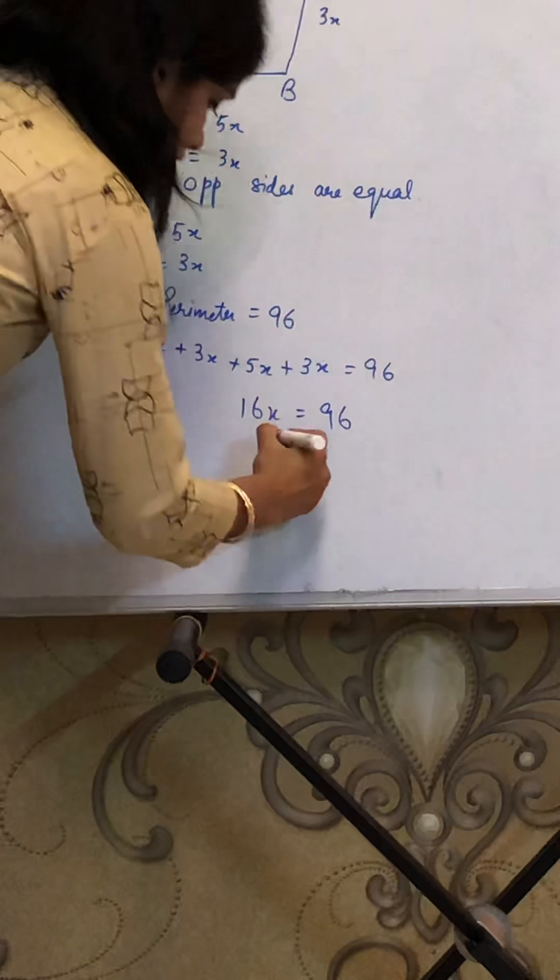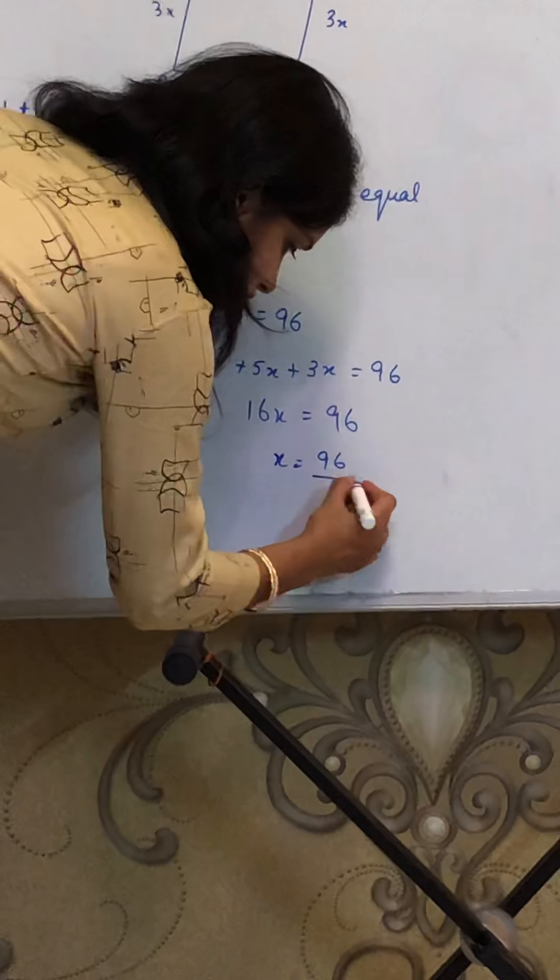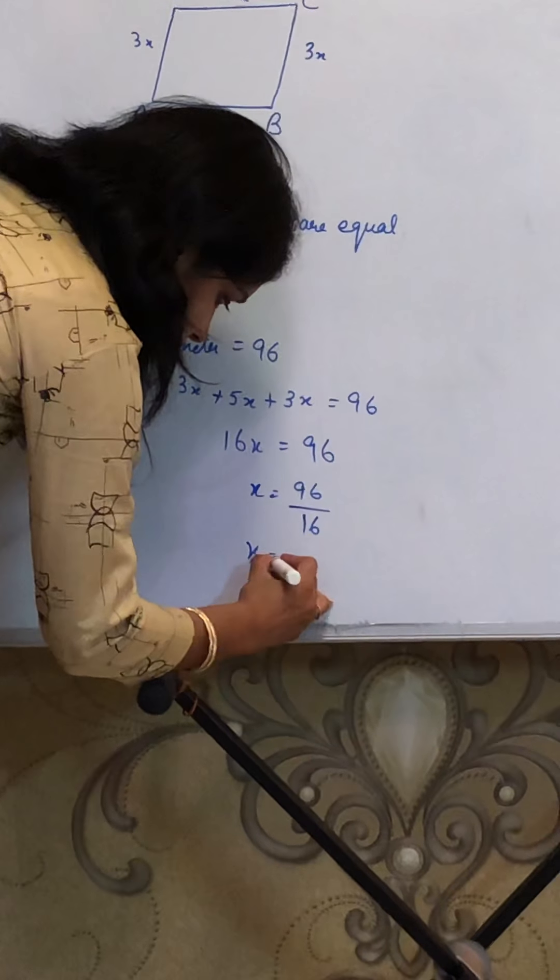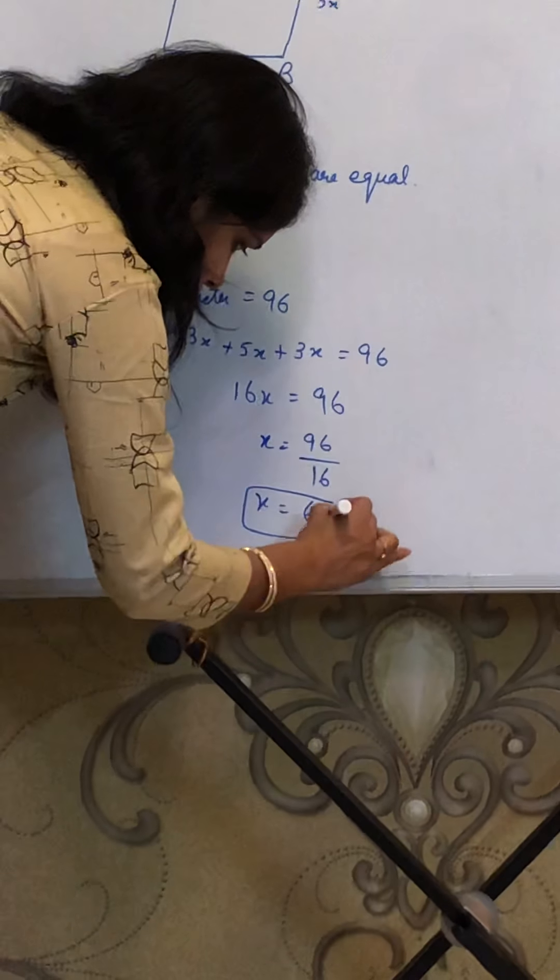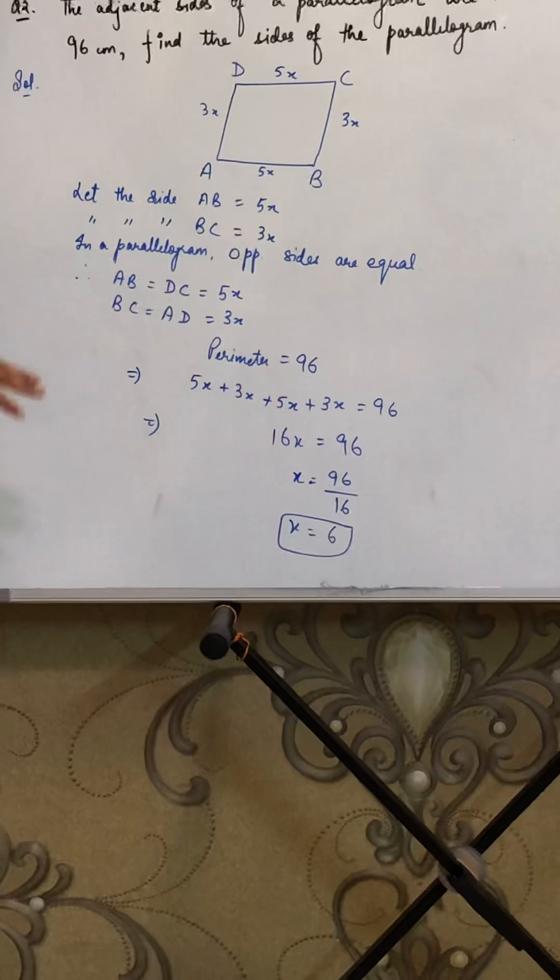And from here, X I will get 96 divided by 16. Because 16 is in multiplication here, it will go in division and you will get, when you cancel it, 6. X equals 6.